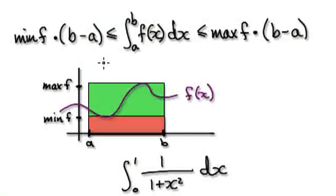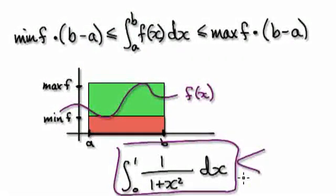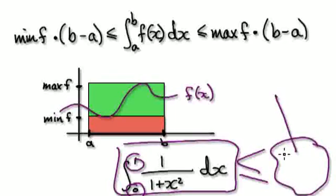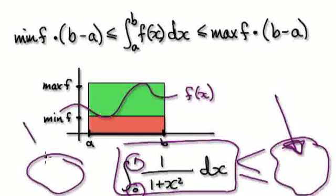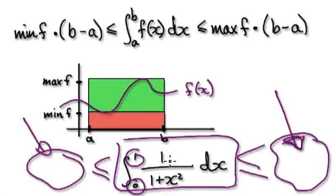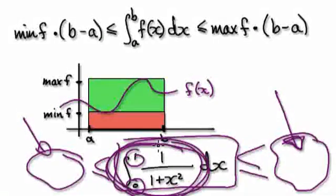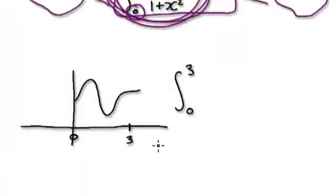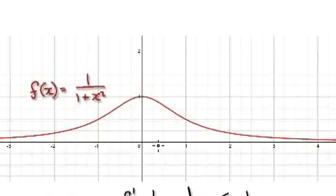To trap this between two things in this interval, we will try and find the biggest possible value that this could be, and then the smallest possible value that this could be. The way we would do that is, let's plot a graph of this thing here. If you plot a graph of this, it will look something like this.